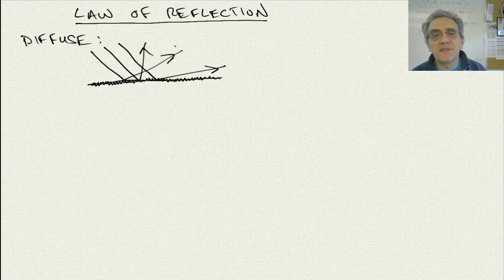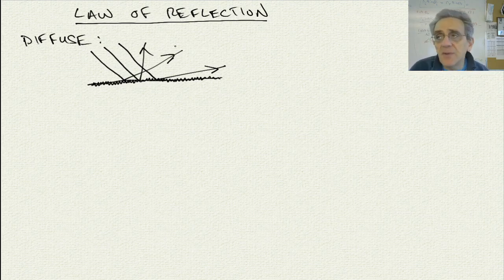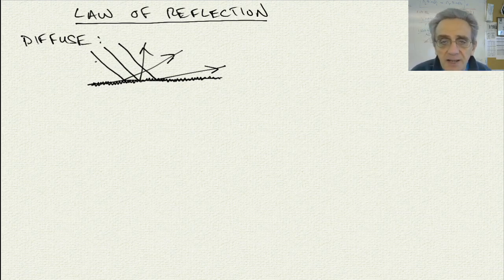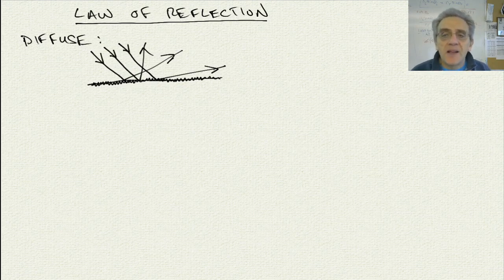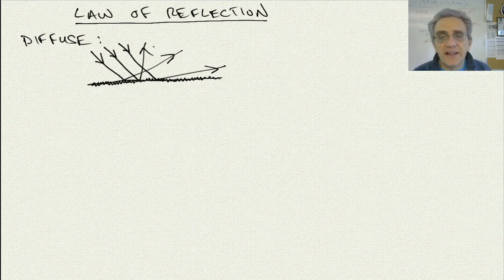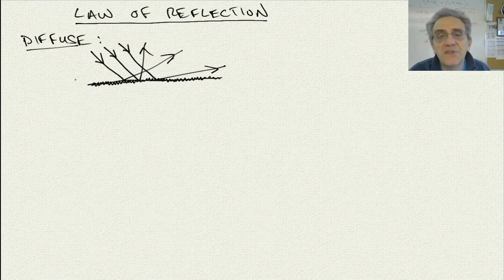The reason why you want it bouncing off in different directions is because you want everybody in the room to be able to see the image. There's no rhyme or reason to the direction of the reflected ray — it's all at random, and that's what you want in that case. That's called diffuse reflection.